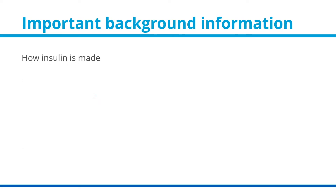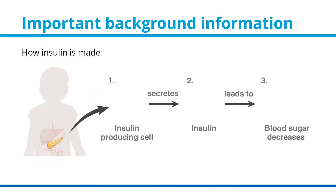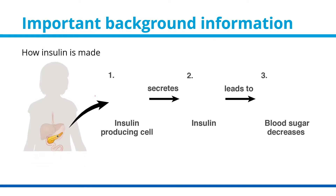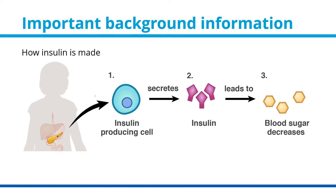How Insulin is Made. In Step 1, the insulin-producing cells in the pancreas make insulin. In Step 2, enough insulin is being made to move all the sugar or glucose into the cells for energy. And in Step 3, the blood sugar levels decrease and stay in the normal range.